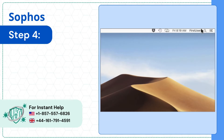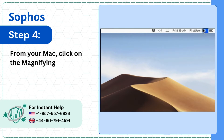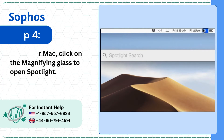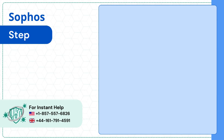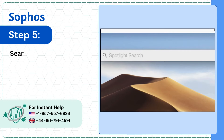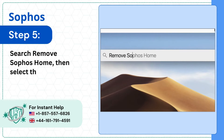Step 4. From your Mac, click on the magnifying glass to open Spotlight. Step 5. Search for Remove Sophos Home, then select the application from the results.